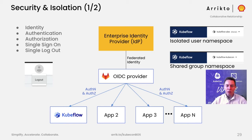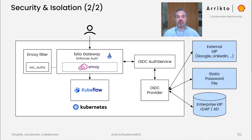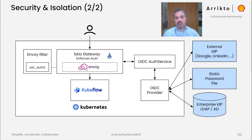We have extended Kubeflow so it becomes one more OIDC client via a component we call the OIDC auth service. This component integrates closely with Istio, and more specifically the Envoy proxy inside Istio. You can learn more about this architecture by following the Kubeflow docs and the blog posts we have made.